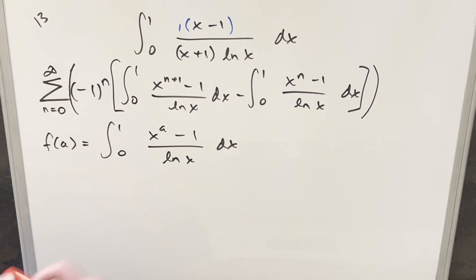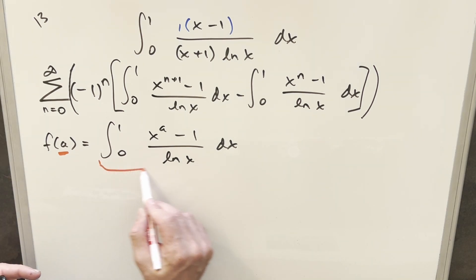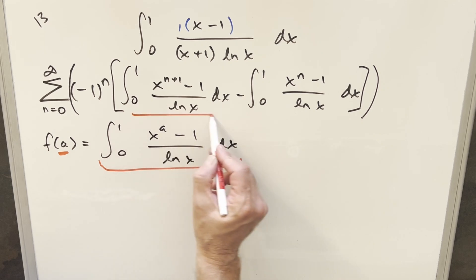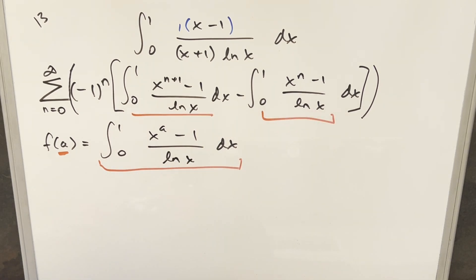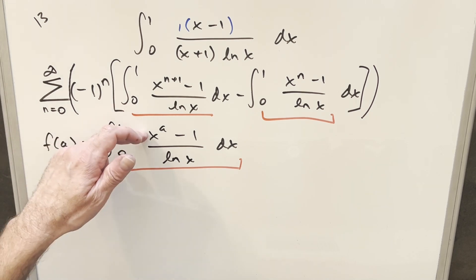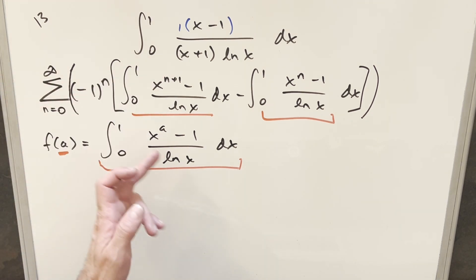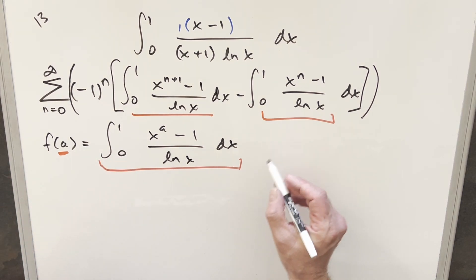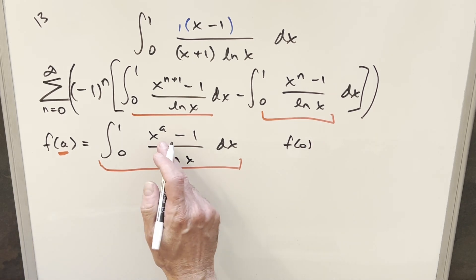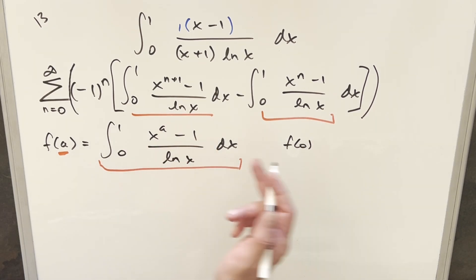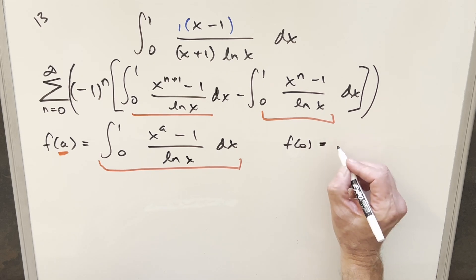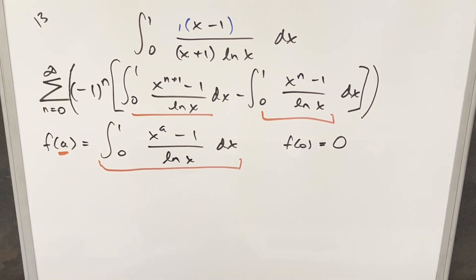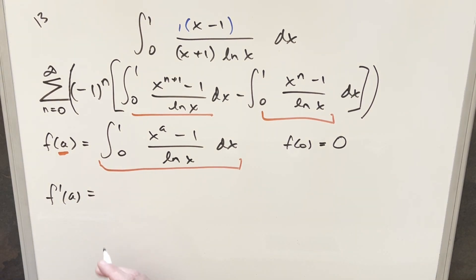Moving on to Feynman's trick — I've parameterized this with the new variable a, so we have our function in terms of a. We're using this to reflect each of these integrals, which are really similar but have a slightly different exponent. For the first one, a equals n plus 1; for the second, a equals n. An important point: when a equals 0, x to the 0 is 1, the numerator becomes 0, so f(0) equals 0. Then we need to take a derivative with respect to a.